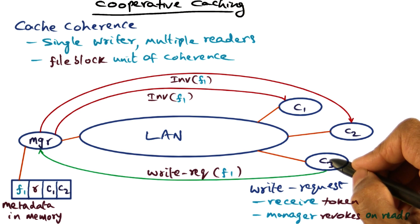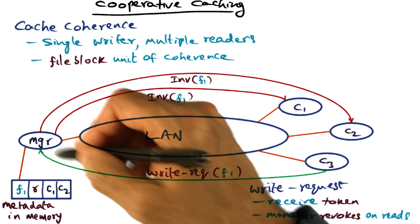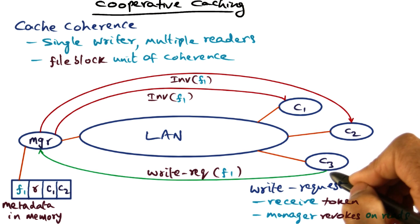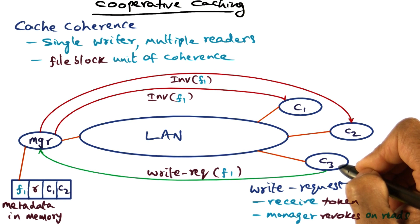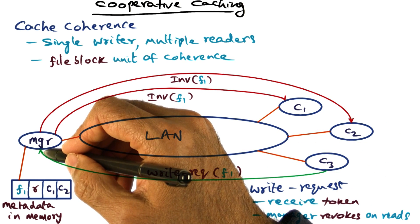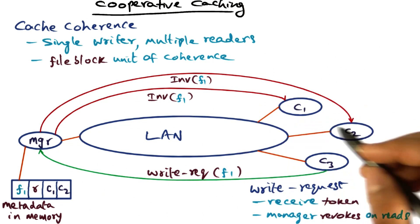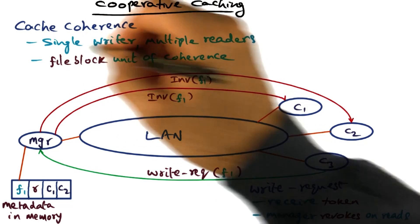And of course, if a particular client is writing to a file and another client also wants to write to the same file, at that point the manager once again is going to revoke the token, invalidate the file at this client, pull back the contents of the file, and then distribute it to a future requester who wants to write to the same file. That's how cache coherence works.